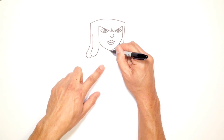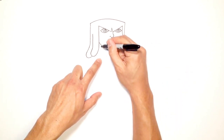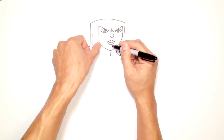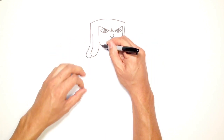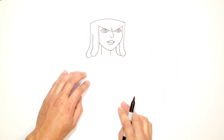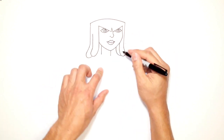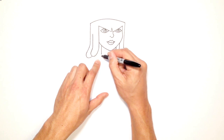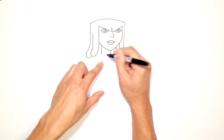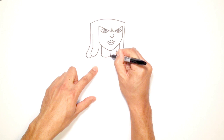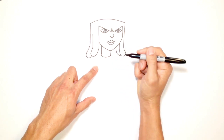Once I get the neck and shoulders in, I can go back and draw the rest of the hair. Let's draw the neck. From the chin, I'm going to draw a line straight down. I want to gauge how thick her neck is — not too thick. I'll draw a line straight down on the other side as well. Now I can draw the cuff of her neck — the collar — with an upward curve.